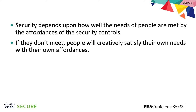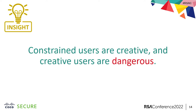Fundamentally, if we don't meet their needs, they're going to work around it. They're going to use a gaming mouse, they're going to write things down, they're going to create their own affordances to solve those needs themselves. And the more constrained we make the environment, the more controls we put on them, the more creative they're actually going to become — which is one of my first insights: creative users are incredibly dangerous. You have not met my needs, therefore I will meet my needs, and your controls are onerous, therefore I will do what I need to do.